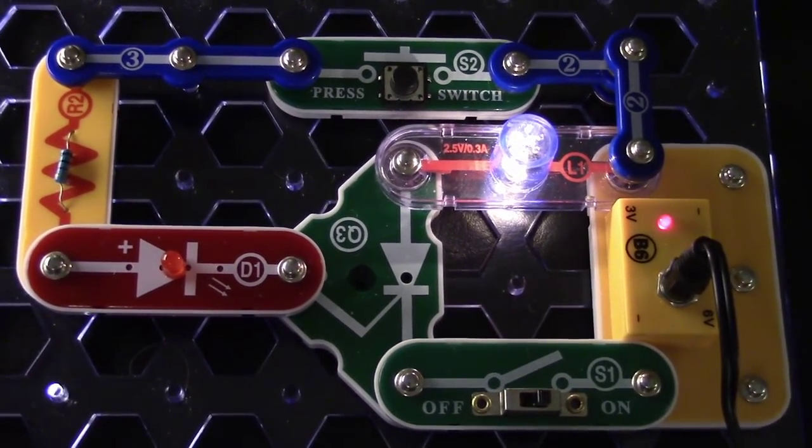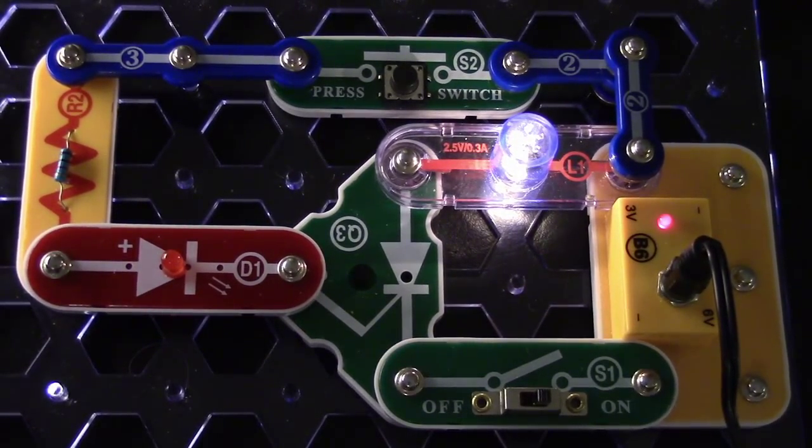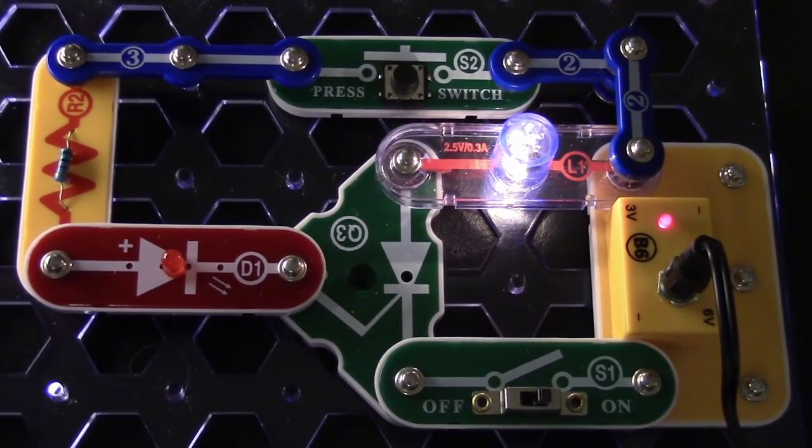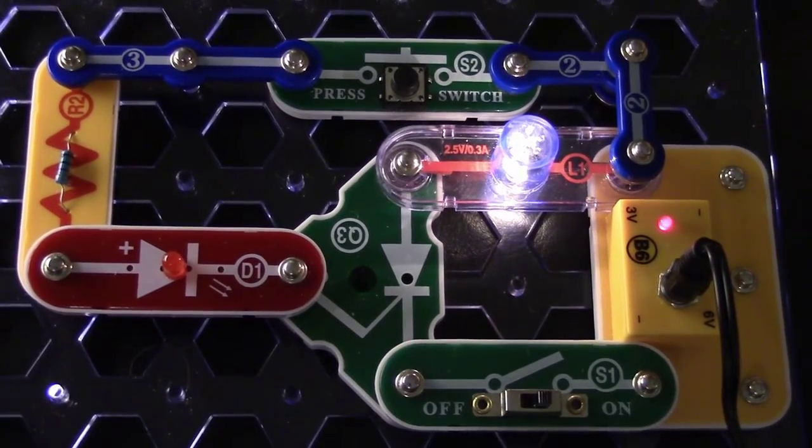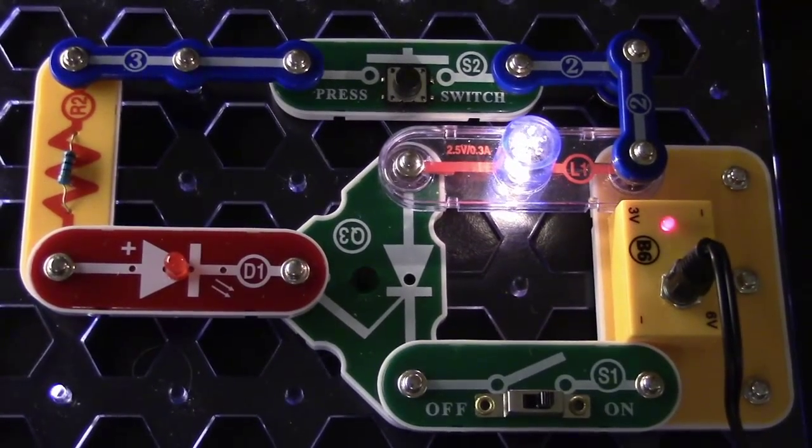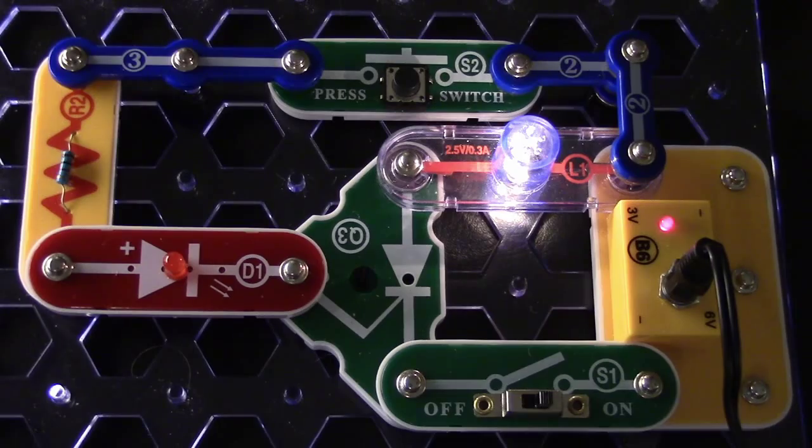So essentially, that is how a silicon controlled rectifier works. It's basically a switch that once it is triggered will always keep the circuit live until power is cut off to it.